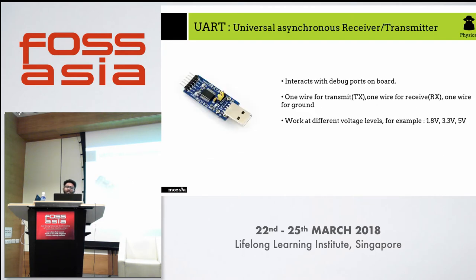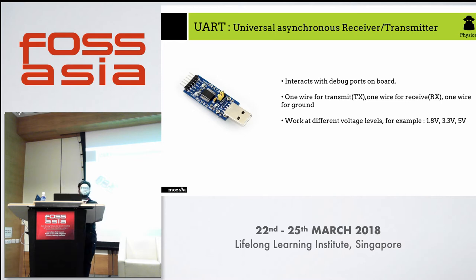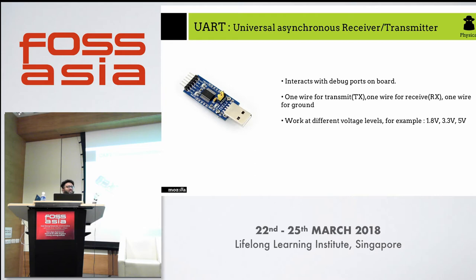This device called UART — Universal Asynchronous Receiver and Transmitter — is used in most hardware and DIY kits. It works on various operating voltages and has TX and RX wires for transmission and reception. You just need this small device — it's around one or two dollars — and you can get access to the physical hardware too. You can actually manipulate the physical hardware.